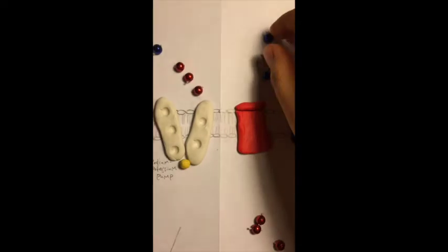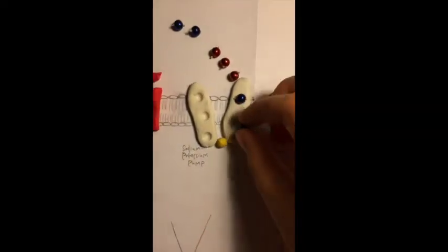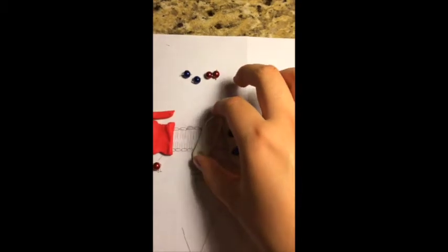The shape of the pump now has a shape complying with the potassium ions. Two potassium ions attach to the pump. The phosphate is unattached and the pump changes shape back into its original state.